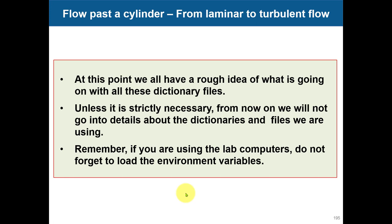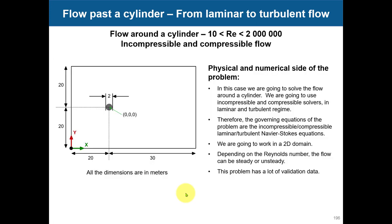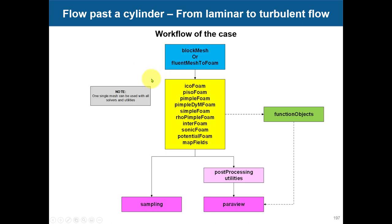In this case we're going to do the classical flow about a cylinder. For a given Reynolds number you'll have different flow behavior. The domain dimensions - this case is 2D but it can be extended to 3D with no problem. We can cover from incompressible to compressible, laminar to turbulent. The workflow: we can generate the mesh using blockMesh, convert, or import the mesh from another format.